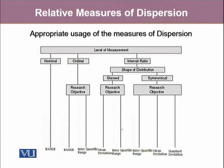All these measures of dispersion have their appropriate usage. For nominal (qualitative) data, we prefer range only. When data is qualitative but measured on an ordinal scale, we prefer either range or interquartile range. For quantitative variables measured on ratio or interval scale, we first look at the shape of the distribution. If the distribution is skewed, we prefer mean absolute deviation calculated using the median, and also interquartile range. If the data is symmetric, we can use interquartile range, mean deviation from the mean, or standard deviation — with standard deviation being most commonly used for symmetric data sets.